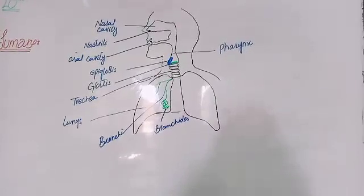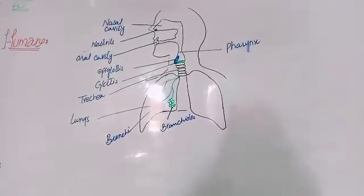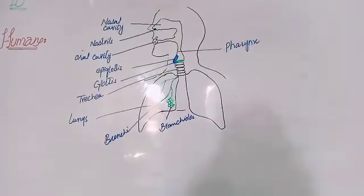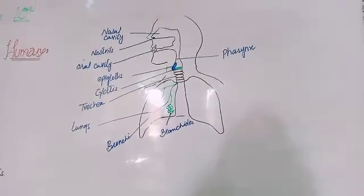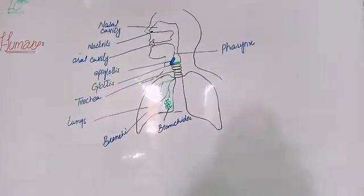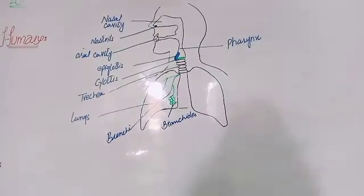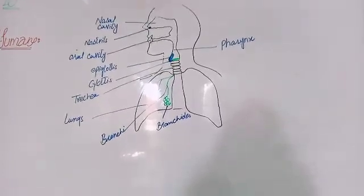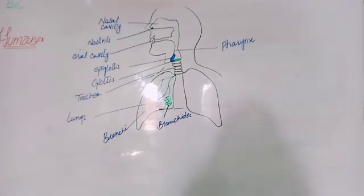From the pharynx, air passes to the larynx. The larynx has two main parts: the glottis, which has a lid-like covering called the epiglottis. The larynx is the part of the air passageway where air particles can pass through, but food particles cannot enter.